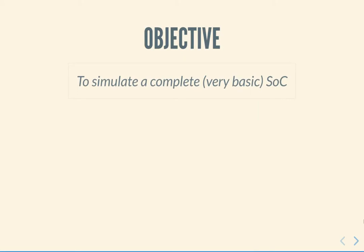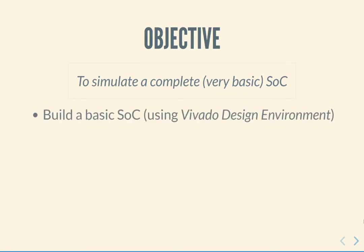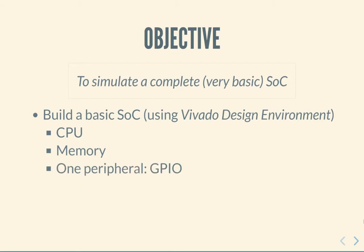The objective of this exercise is to simulate a complete, although very basic, system on chip. We will build a basic SoC using the Vivado design environment. The SoC will consist of a CPU to execute a program, memory where the program will be stored, and one peripheral which is a general purpose input/output pin, in this case used as one output.